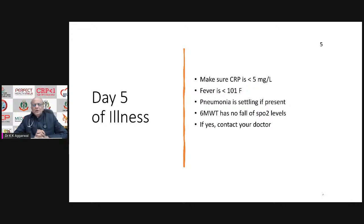The six-minute walk test by day five should show no fall in SpO2 levels. If your SpO2 level is dropping during the six-minute walk test by day five, it means the pneumonia is still active and worsening.